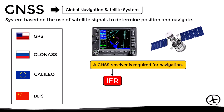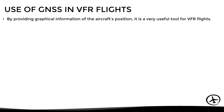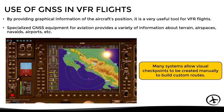For IFR flights, certified integral equipment is required in order to use GNSS for performance-based navigation operations. However, for VFR flights there is no such requirement, since the GNSS is used for reference only. By providing graphical information of the aircraft's position in relation to the surrounding terrain, it is a very useful tool. In addition to this, specialized GNSS equipment for aviation provides a variety of information about terrain, airspaces, NAVAIDs, airports, and other useful data. Many systems even allow visual checkpoints to be created manually by the pilot to build custom routes or procedures.